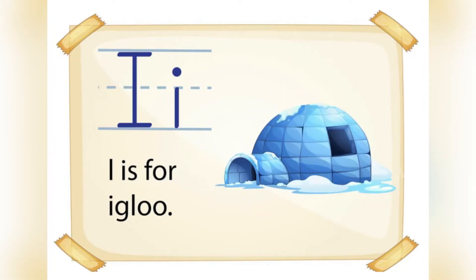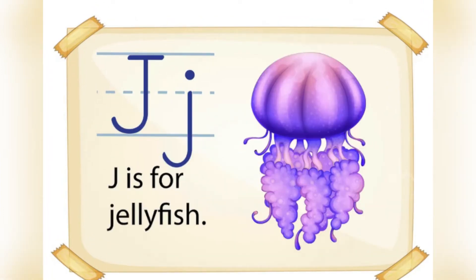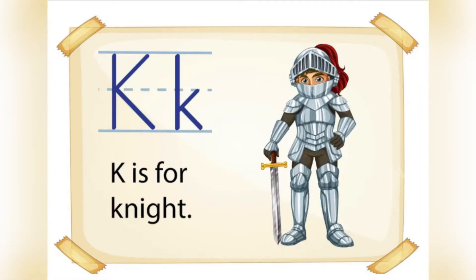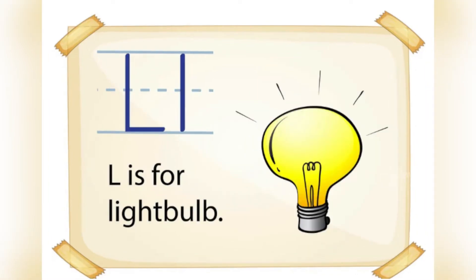I is for Igloo. J is for Jellyfish. K is for Night. L is for Lightbulb.